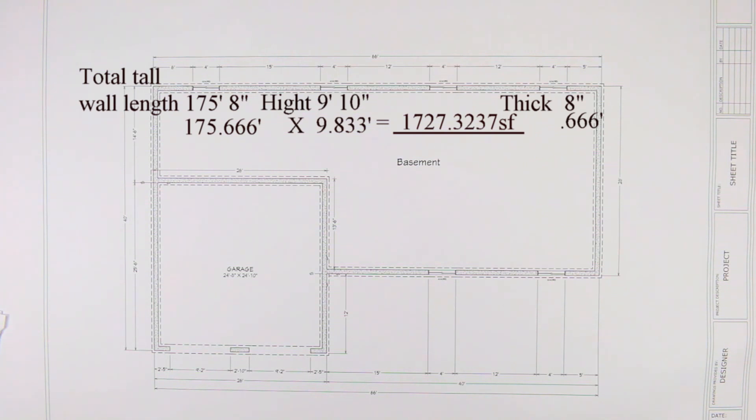Now we need to times that by the thickness of the wall which is 8 inches or 0.666. So we have 1727.3237 times 0.666, equals 1,150.3975 cubic feet.